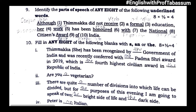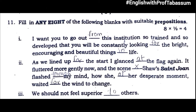Peter is an Italian. Bit number eleven: fill in any eight of the following blanks with suitable prepositions. 'I want you to go out from this institution so trained and so developed that you will be constantly looking for the bright, encouraging and beautiful things in life.' 'As we lined up for the start, I glanced at the flag again.' 'It fluttered more gently now.' 'Shaw's Saint Joan flashed through my mind — how she, at her desperate moment, waited for the wind to change.' We should not feel superior to others.